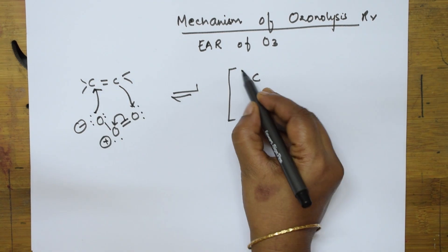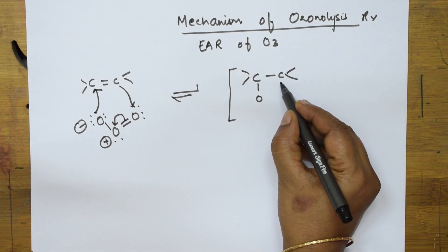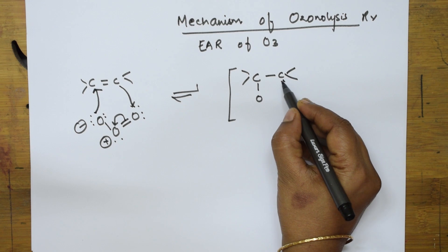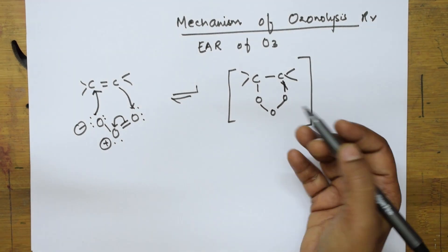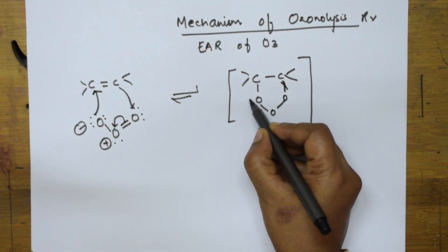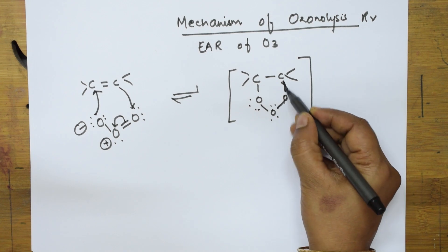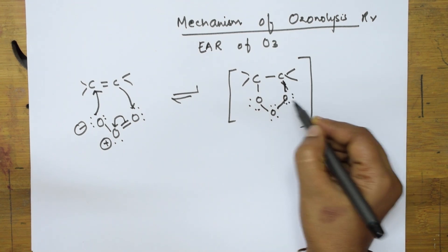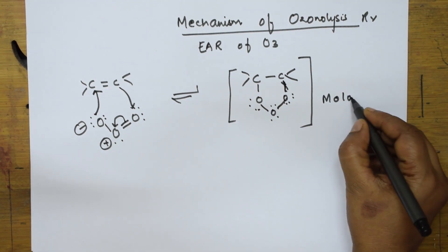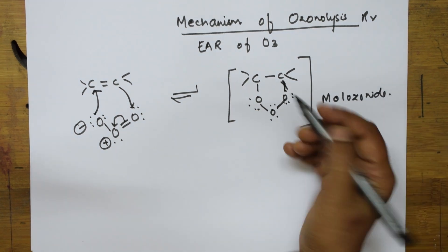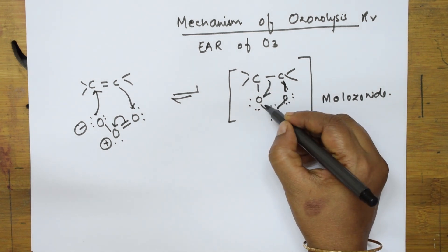So this looks like: carbon with two bonds here, bonded to oxygen, and one more carbon with two bonds bonded to one more oxygen. This compound formed is called molozonide.